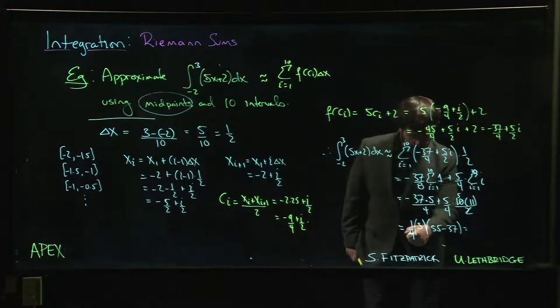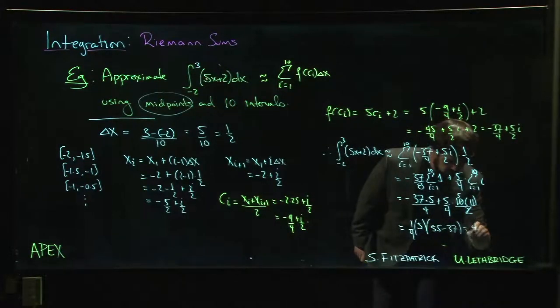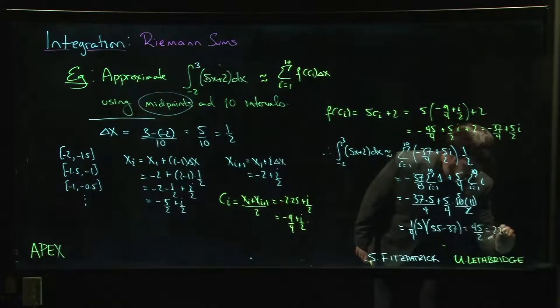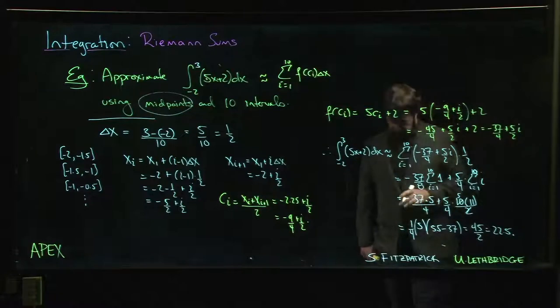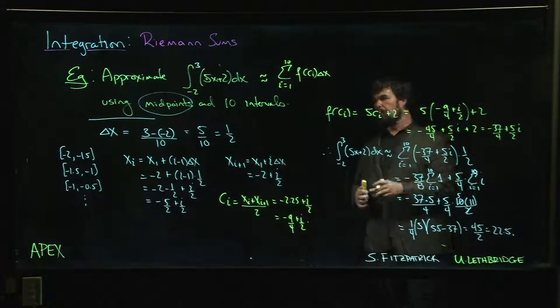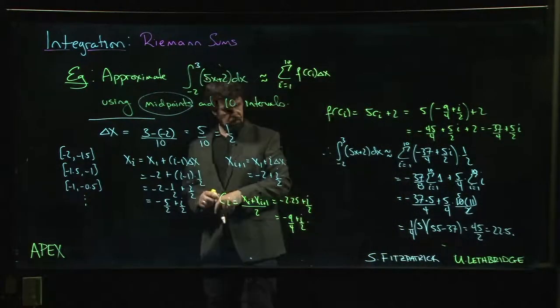Okay, 18 over 4, 9 over 2, 45 over 2, or 22.5. Okay. Not so bad. It's a bit of work, but we can do it.